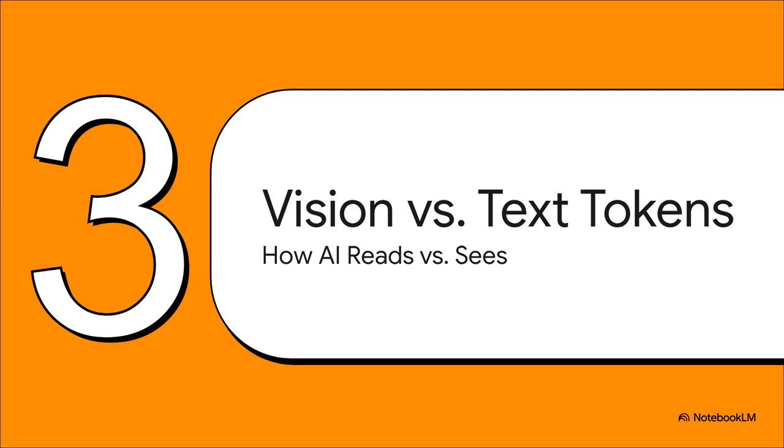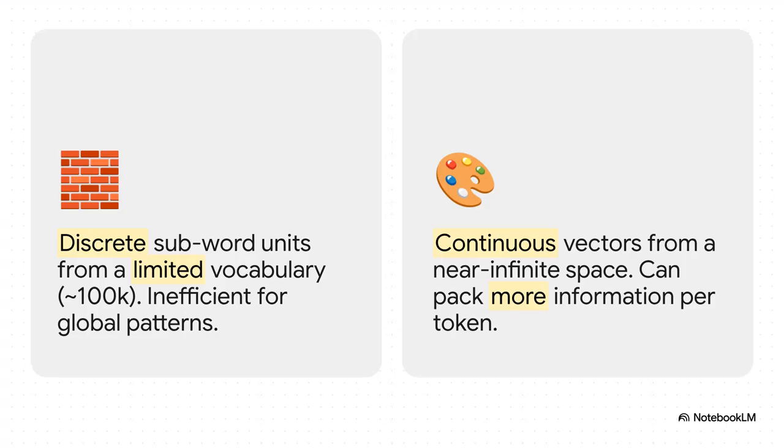Okay, so how do you even begin to solve a problem like that? Well, the secret lies in a really fundamental difference between how an AI reads text versus how it sees an image. And it all comes down to something called tokens. Think of it like this. On one hand, you've got text tokens. They're kind of like individual Lego bricks from a set with a limited number of shapes. On the other hand, you have vision tokens, which are way more like custom-molded clay. You can shape them in almost infinite ways.